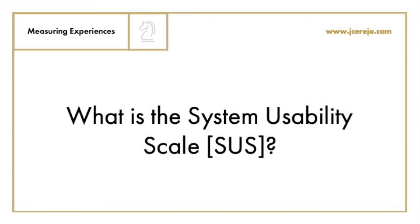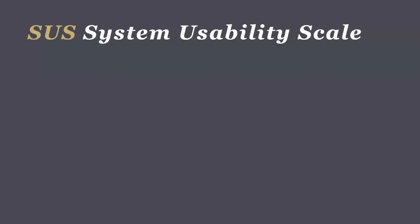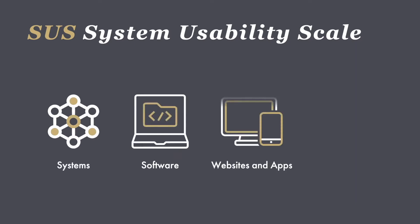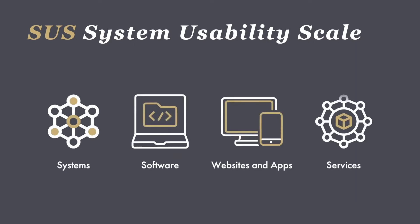What is the System Usability Scale, also known as SUS? The System Usability Scale is one of the oldest and most widely used metrics for assessing the perceived usability and learnability of any system, software, website and applications, or even services.